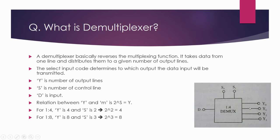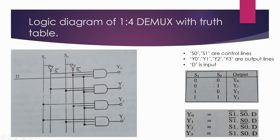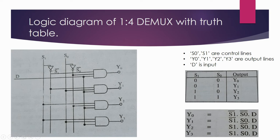Whatever logic we provide on the select line, on that basis the particular output line is selected. Now let's see the logic diagram and truth table of the demultiplexer. When we have to pass the D input to Y0 output, the select lines should be equal to 0 — s1 s0 should equal 0. Now when s1 is equal to 0, the 0 is passed through this inverter.